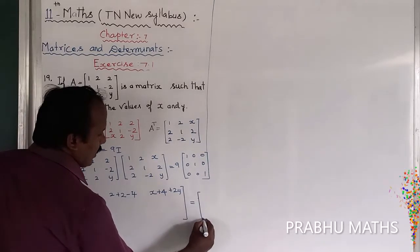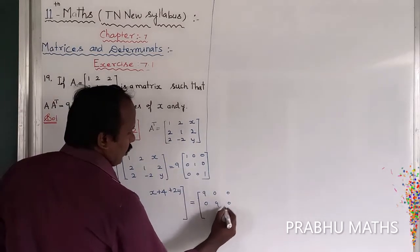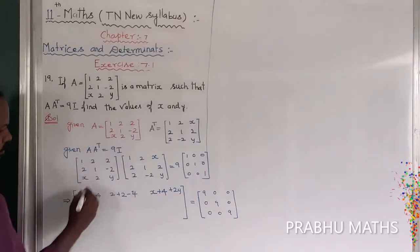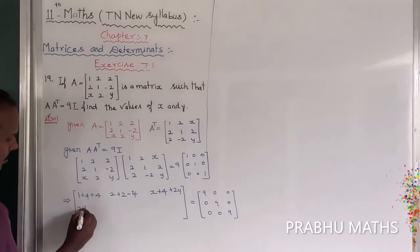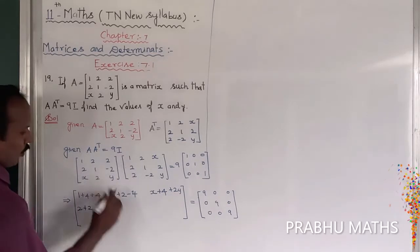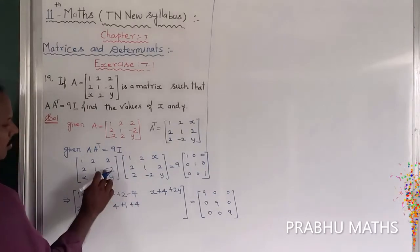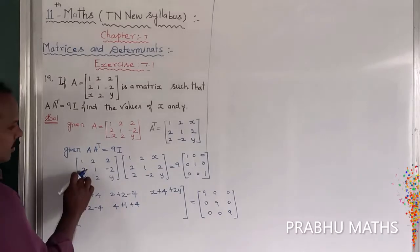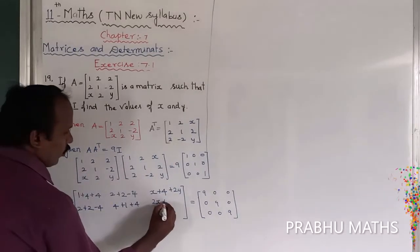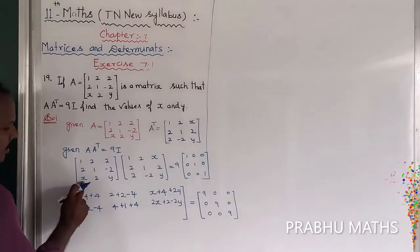The right-hand side is 9I = [9, 0, 0; 0, 9, 0; 0, 0, 9]. Second row, first column: 2×1 + 1×2 + (-2)×2 = 2 + 2 - 4 = 0. Second row, second column: 2×2 + 1×1 + (-2)×(-2) = 4 + 1 + 4 = 9. Second row, third column: 2×X + 1×2 + (-2)×Y = 2X + 2 - 2Y.